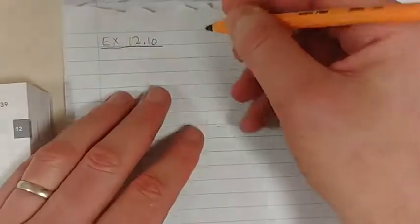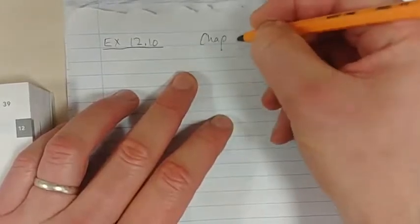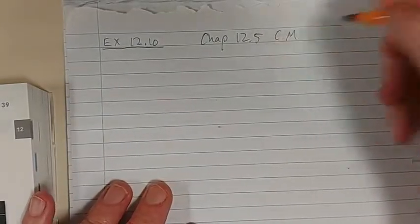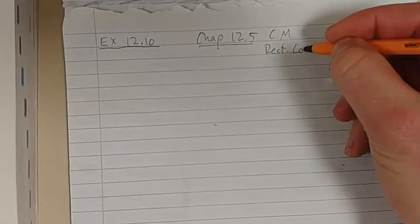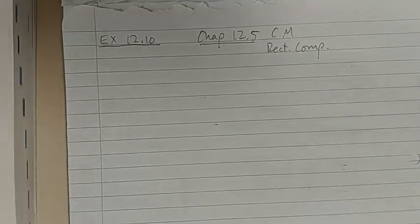We're going to look at example 12.10. This is chapter 12.5 and this is curvilinear motion. Remember, chapter 12, we're looking at curvilinear motion, but we are analyzing it using a rectangular coordinate system — x, y, z Cartesian vectors.